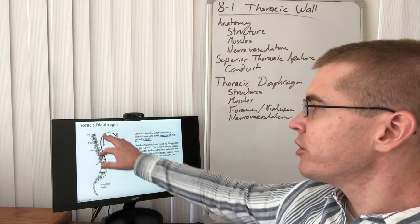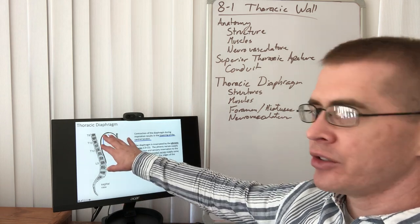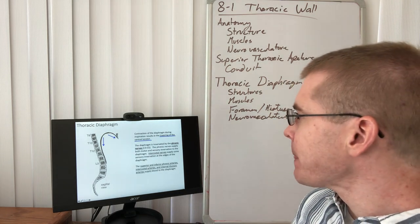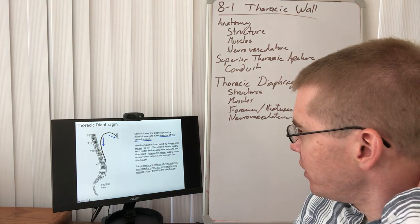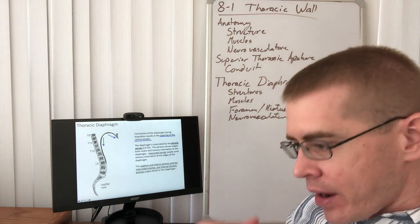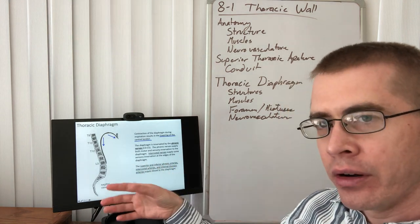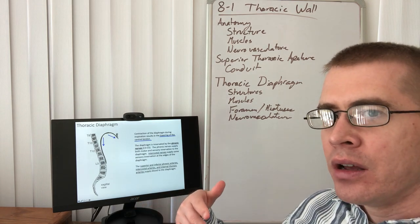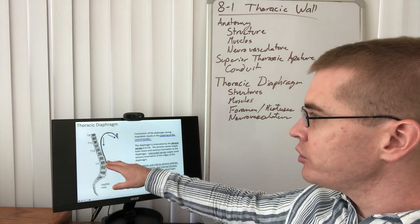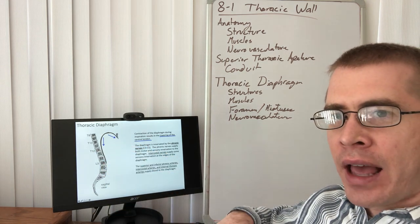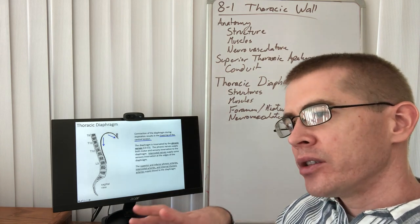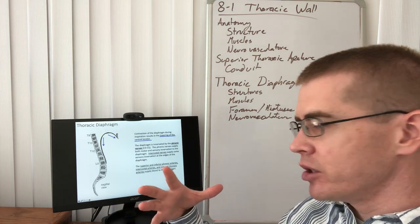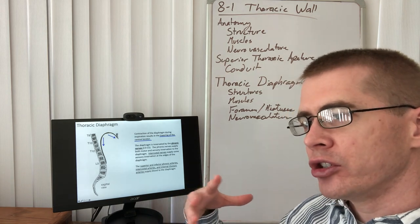Activation of the phrenic nerve causes the central tendon to lower, causing the lungs to expand — low pressure, air goes in. The diaphragm is mainly supplied by C3, C4, C5 — the phrenic nerve — but intercostal nerves running close to the inferior thoracic aperture can also cross over and supply sensory innervation, not motor, to the diaphragm.